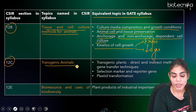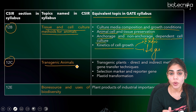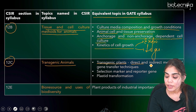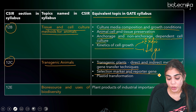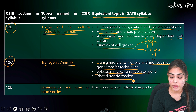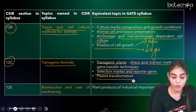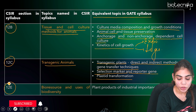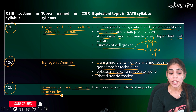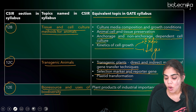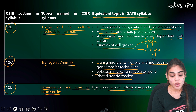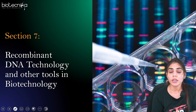The 12C part dealing with transgenic animals requires you to focus on topics such as transgenic plants, direct and indirect methods of gene transfer, selection markers, reporter genes, plastid transformation methods, and Agrobacterium-mediated gene transfer. The 12E part covering bioresources and uses of biodiversity under CSIR NET Life Sciences is equivalent to plant products of industrial importance in GATE Biotechnology. This covers all of Section 6.